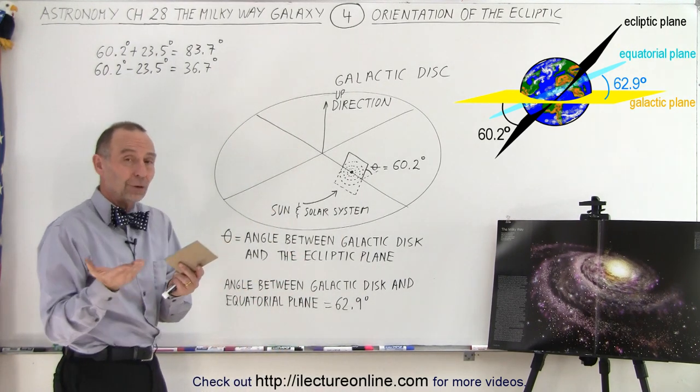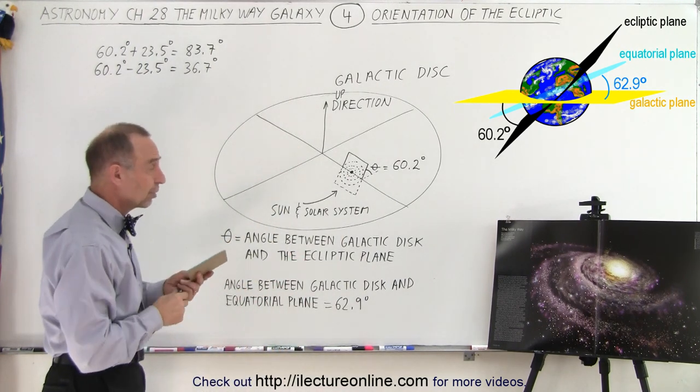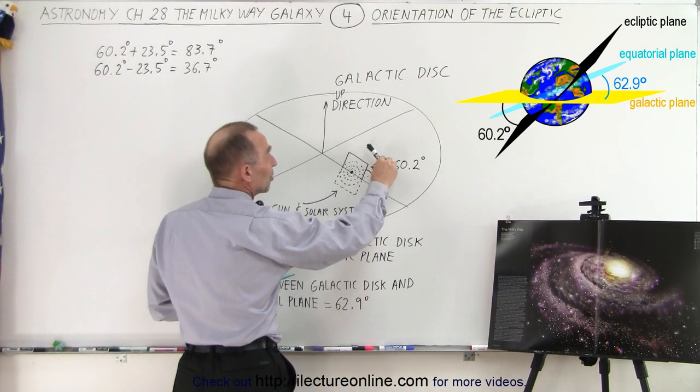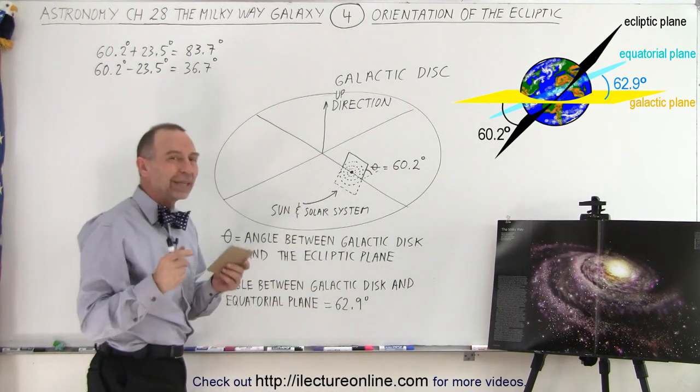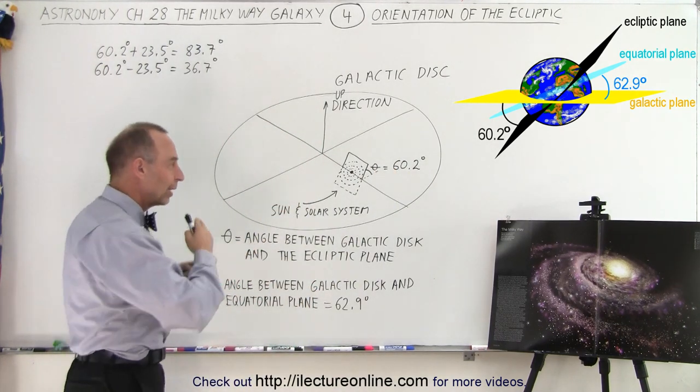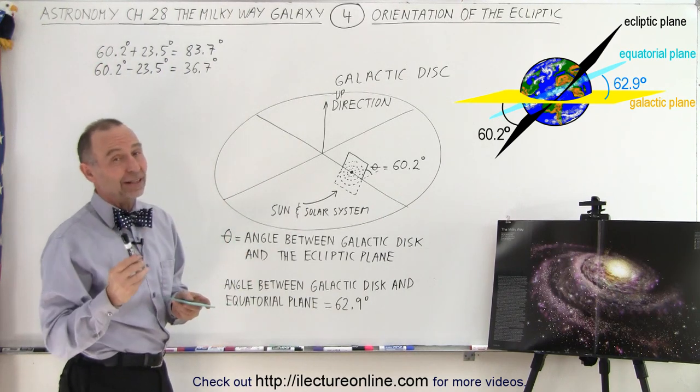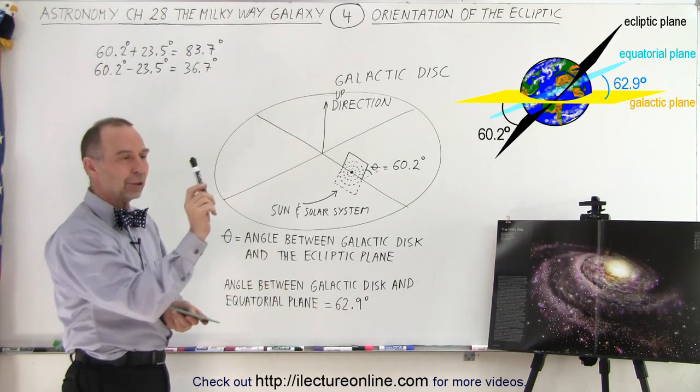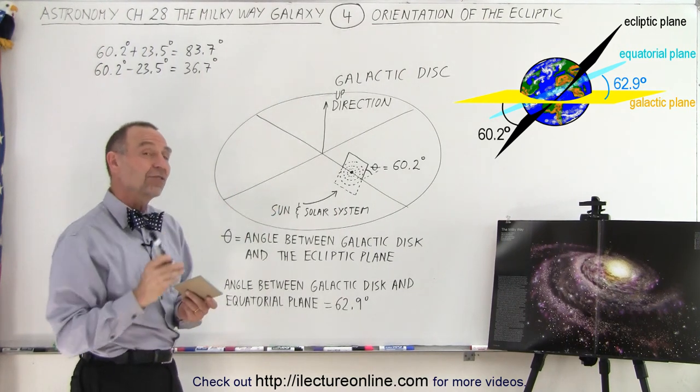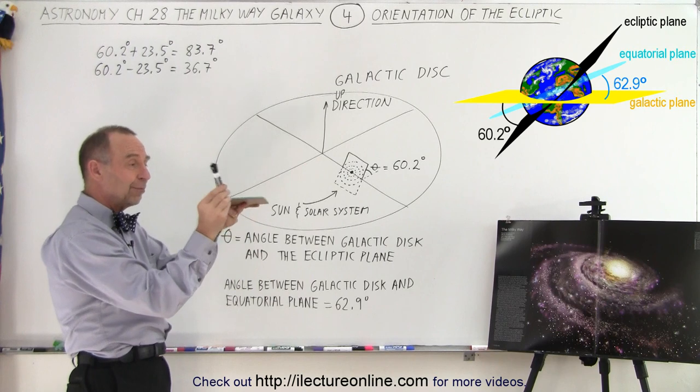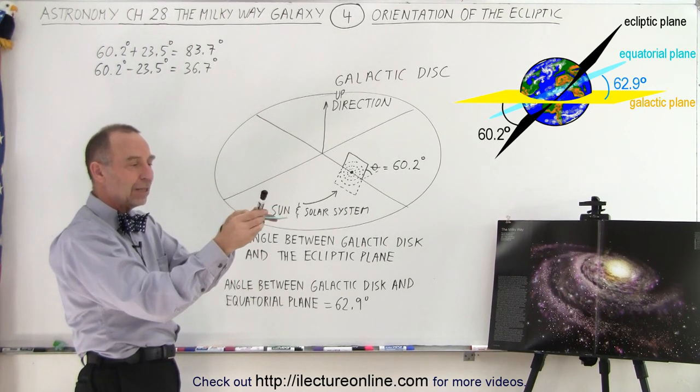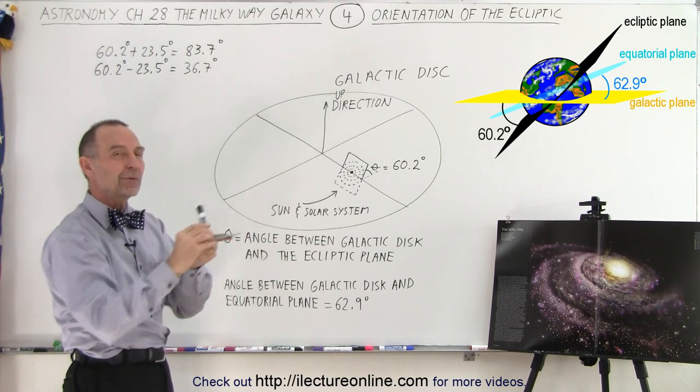Now realizing that the Earth's tilt relative to the ecliptic is 23.5 degrees, you might think we want to add or subtract 23.5 degrees from that to get the direction of the actual tilt of the Earth relative to the galactic plane. But that's not necessarily the case, because remember the Earth's axis precesses around like this every 26,000 years.